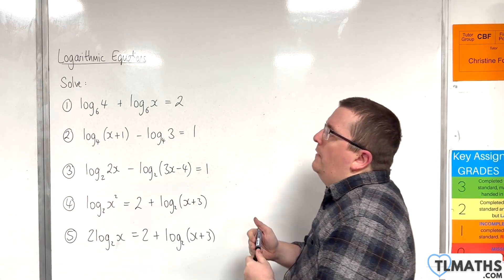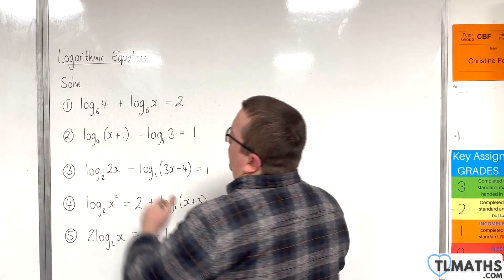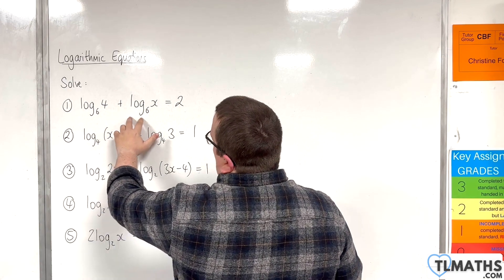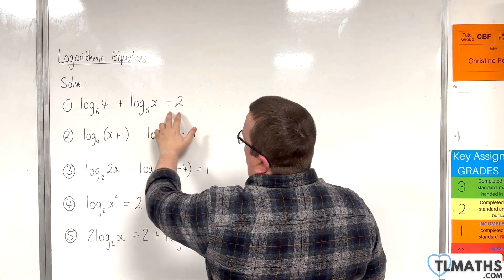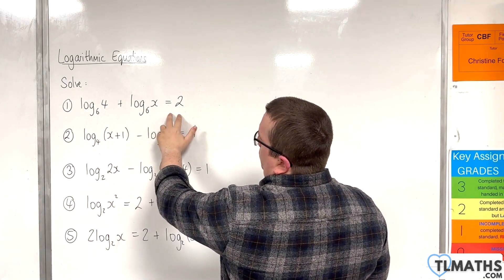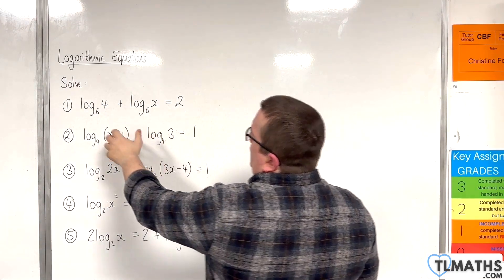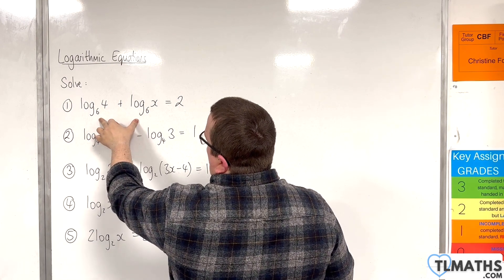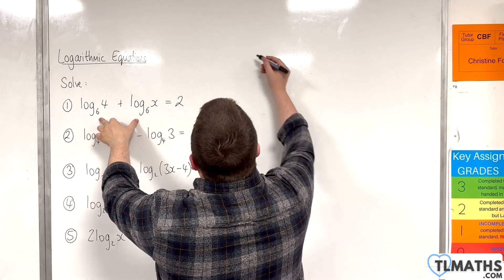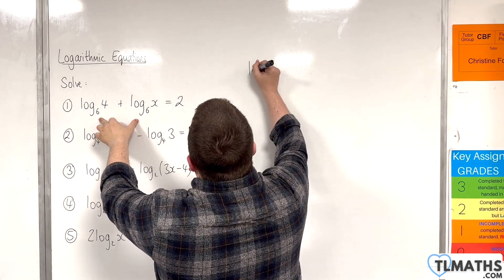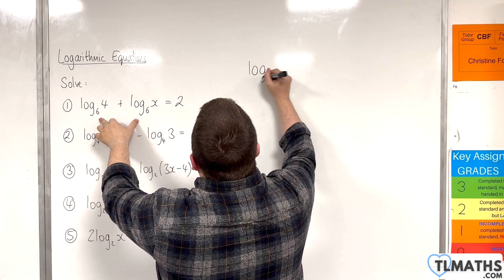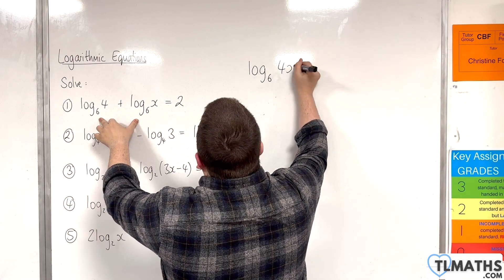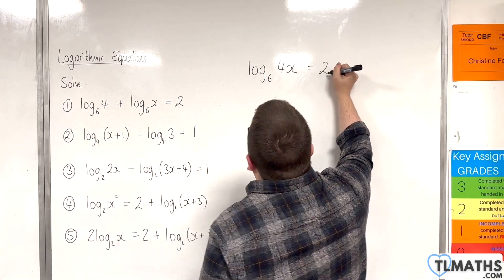For the first one, we have log base 6 of 4 plus log base 6 of x is equal to 2. First of all, use the product rule to bring those two together, and we can write that as log base 6 of 4 times x, which is equal to 2.